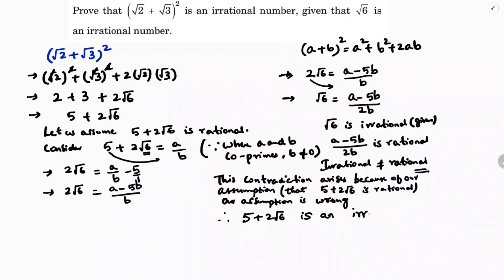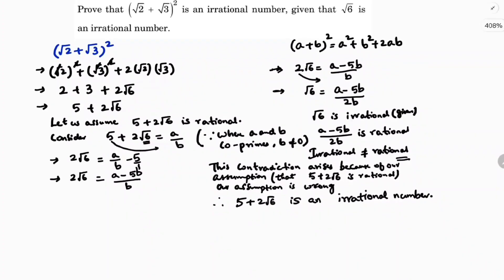Since 5 + 2√6 is an irrational number, and 5 + 2√6 is nothing but (√2 + √3)², we conclude that (√2 + √3)² is an irrational number.